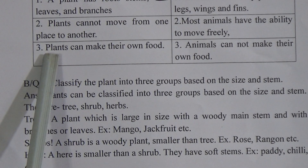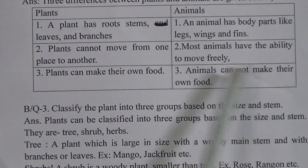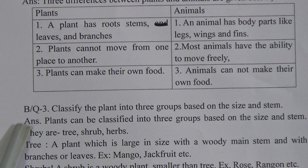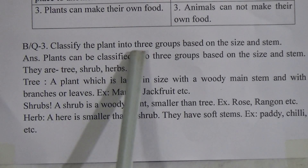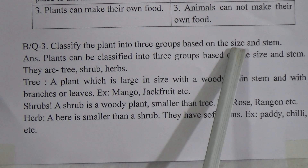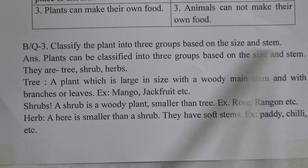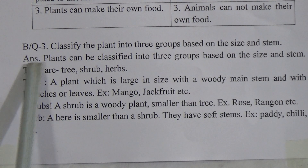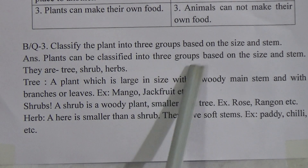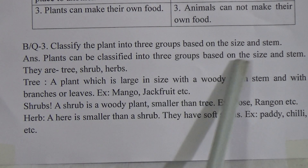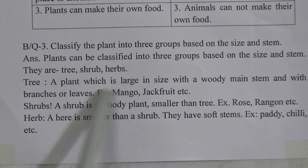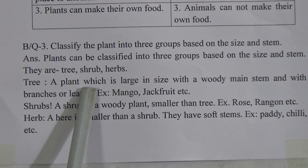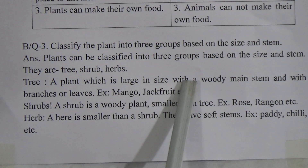Third difference — plants can make their own food, but animals cannot make their own food. Now for the last broad question: classify plants into three groups based on size and stems. Plants can be classified into three groups based on size and stems. They are: tree, shrub, and herb.